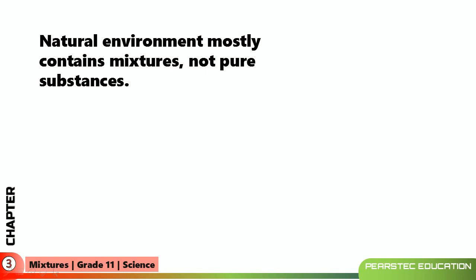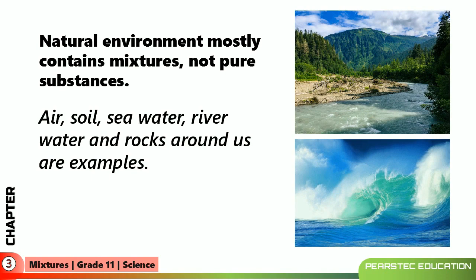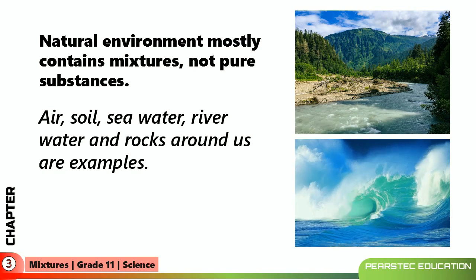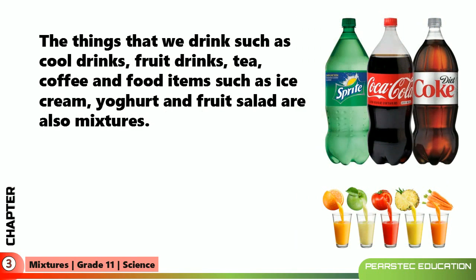The natural environment mostly contains mixtures, not pure substances. Air, soil, seawater, river water, and rocks around us are examples of mixtures. The things we drink — such as cool drinks, fruit drinks, tea, coffee — and food items such as ice cream, yogurt, and fruit salad are also mixtures. Coca-Cola, Sprite, Coke, and some juices are all called mixtures as well.